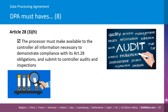Moving on to Article 28.3h. This requires that the processor must make available to the controller all information necessary to demonstrate compliance with its Article 28 obligations and submit to controller audits and inspections. Depending on the bargaining power of the parties, this may be a difficult clause to agree. For example, should audits take place on-site or off-site? What information or facilities will be made available? How often can an audit take place? Does a controller need to provide notice before conducting an audit? Some processors try to get round on-site audits by suggesting they can provide written reports or show compliance with certain industry standards.